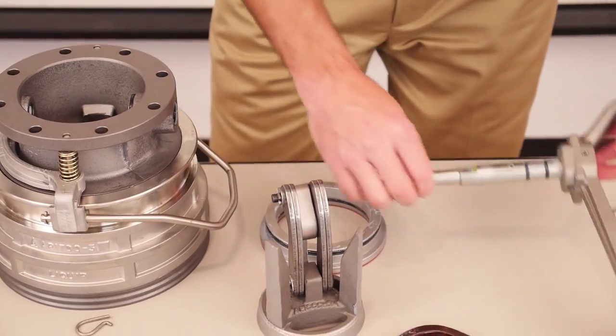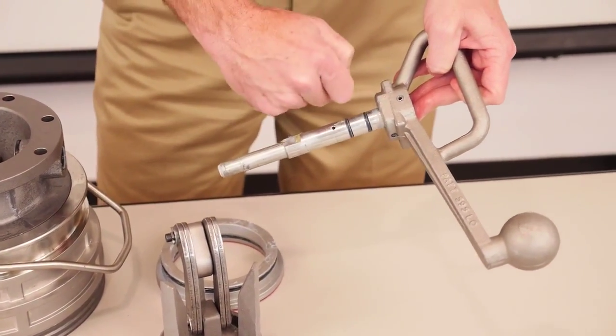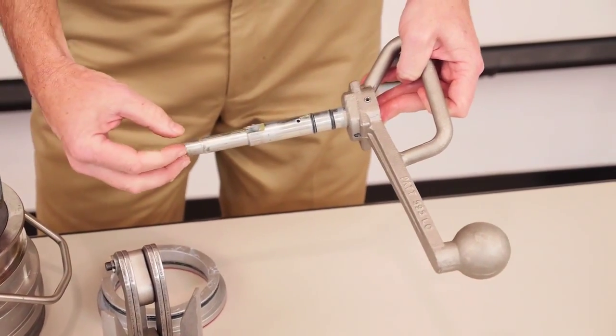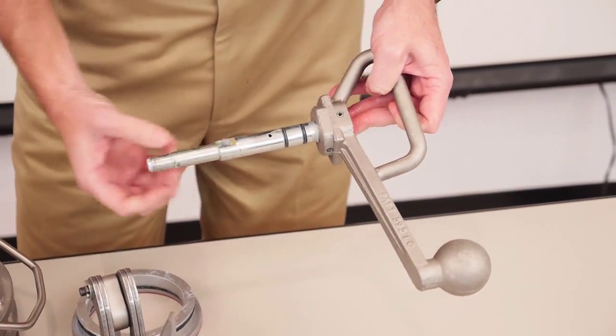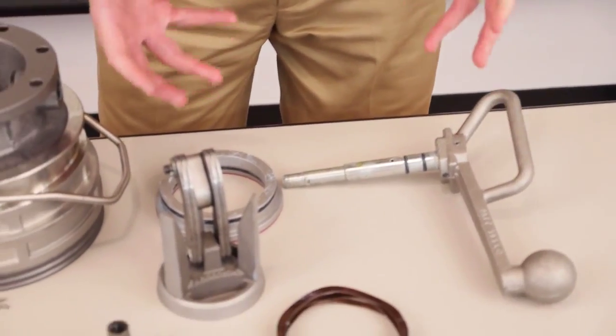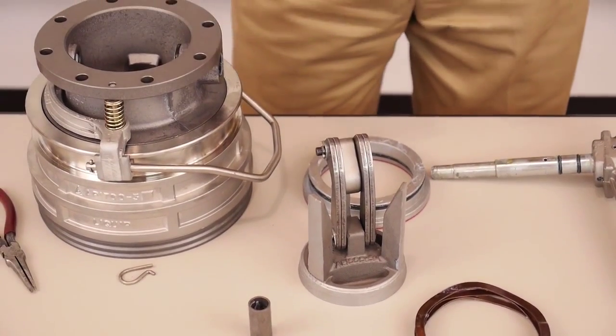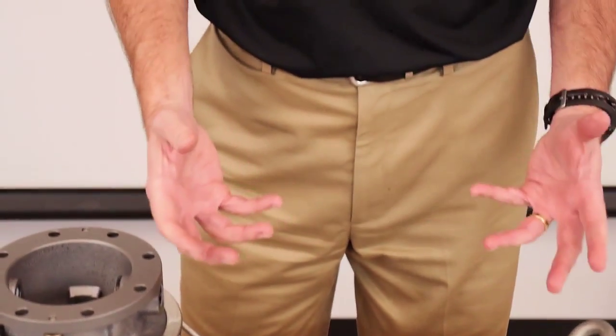Your shaft seals are on the shaft. They're just a cut groove, so again, with your pick, you can remove those easily. Slide your new seals in. So as you can see, in just a couple of minutes, you have the coupler apart, all your seals replaced, and you're ready to put it back together.